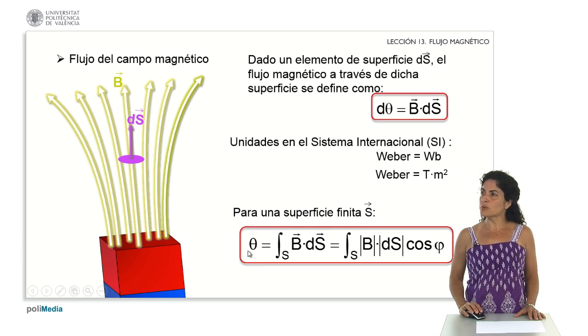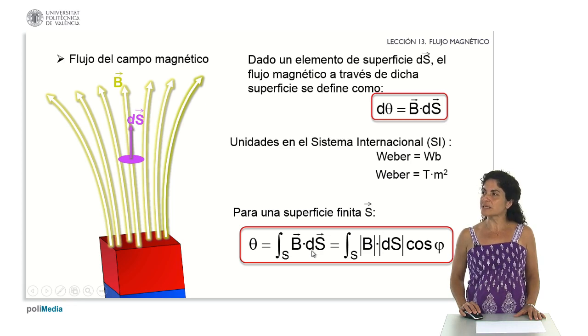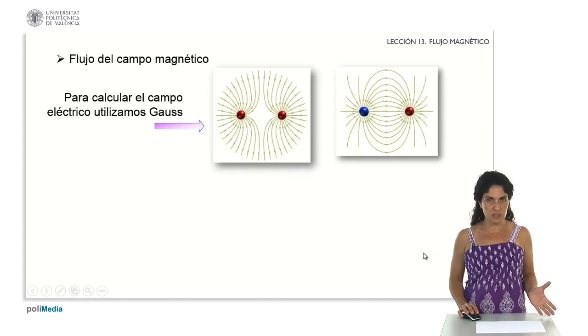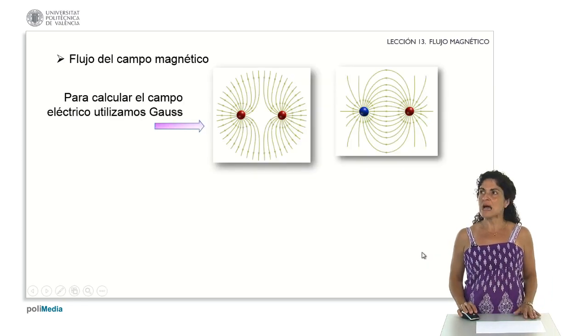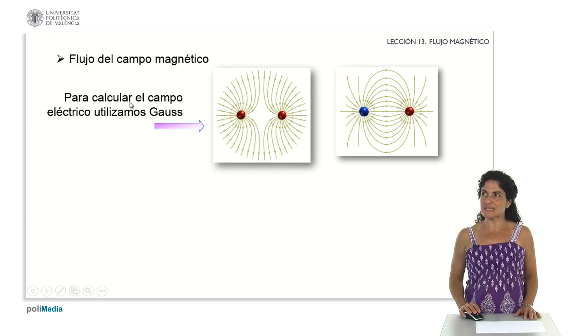If I have a finite surface area, I can calculate the total flux through that surface area from this integral, and from this integral the flux would be given by the integral extended to the whole surface of the dot product of the field vector by the surface vector. If I develop the dot product, I have to keep in mind that it would be modulus of the field vector times modulus of the surface vector times the cosine of the angle formed by the two vectors, like any other dot product.